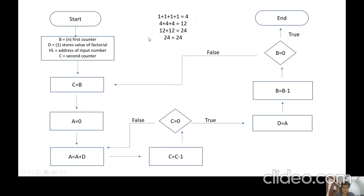This is how the factorial of a number is calculated in the 8085 simulator. I have taken two counters into account: counter B and counter C. Counter B keeps count of all the single lines that are executing — similarly, in calculating factorial of six, there would be six such lines. Counter C keeps count of the single addition operations being performed in each line. For example, in the first line, C counter will be equal to four since the addition operation is done four times.